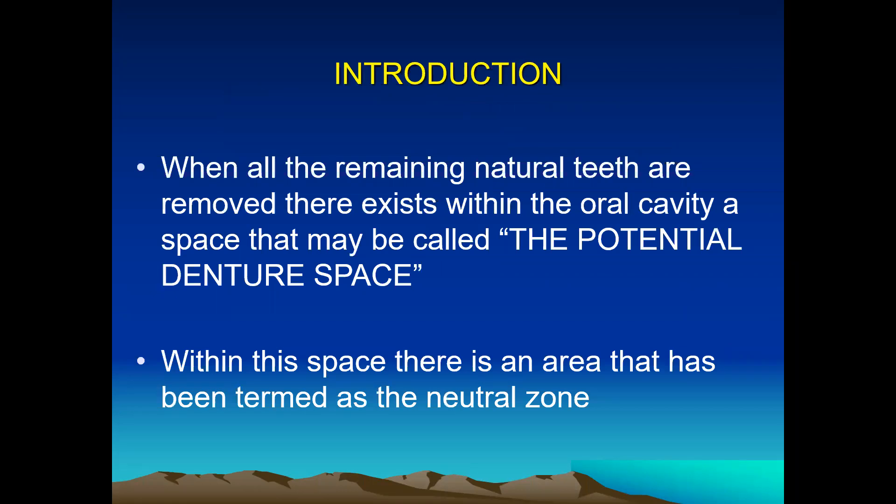First, we will understand what is the Neutral Zone. When all the remaining natural teeth are removed, there exists within the oral cavity a space that may be called the potential denture space. Within this space, there is an area that has been termed the Neutral Zone, or the area of minimal conflict.